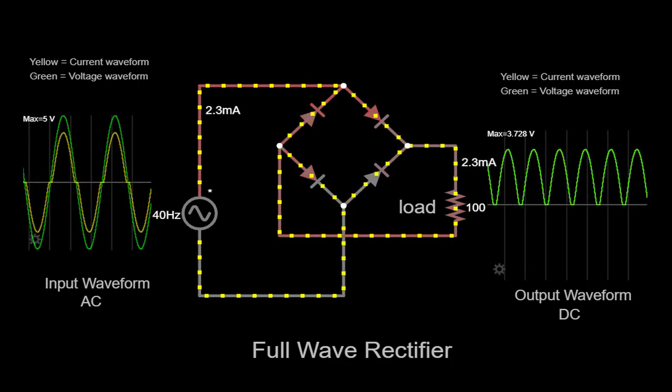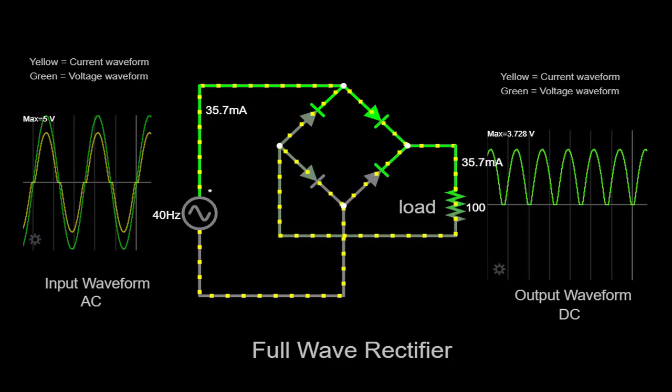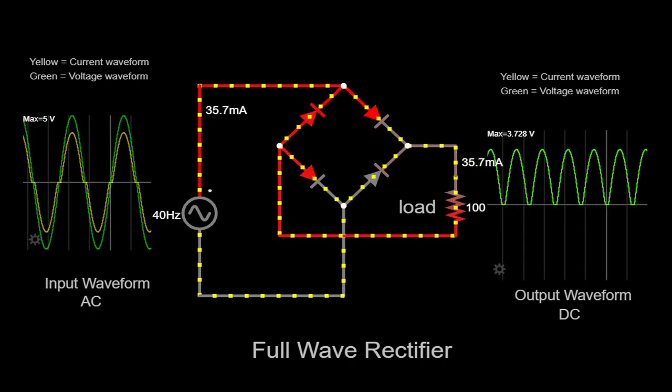A full-wave rectifier is an essential electronic circuit that converts alternating current, AC, into direct current, DC.